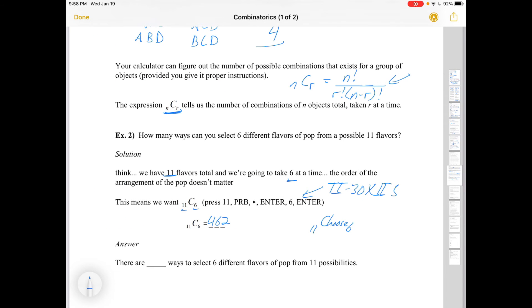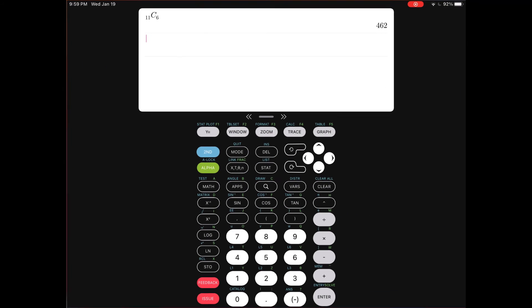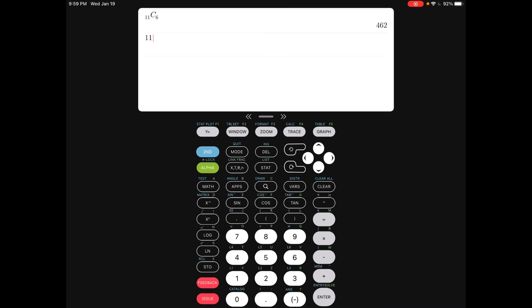Now, why is it a combination? It doesn't matter the order that you put them in your cart. You're still going home with the same six different flavors of pop. If order did matter, then that number would be way, way bigger. Let's just figure that out. If I do 11P6, it's an enormous number in comparison: 332,640 compared to 462. Adding in the variable of order makes a big difference.